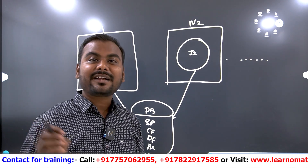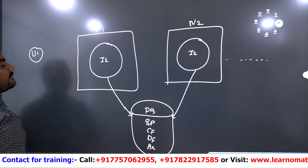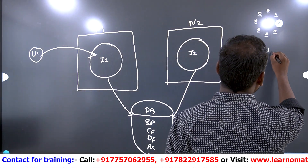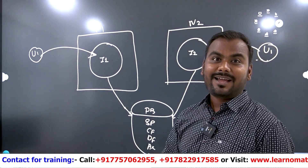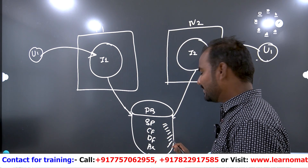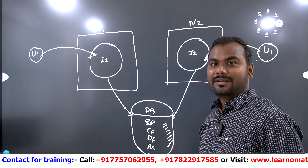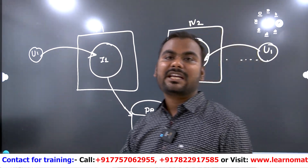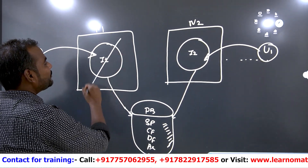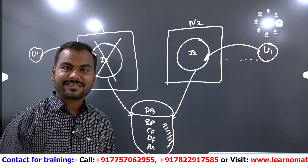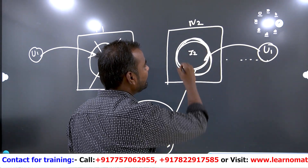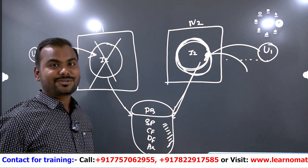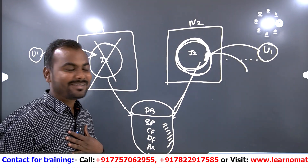This database is shared by instance number one and instance number two. The end user is getting connected to the database, and when user one says they want to connect, they don't care whether they are connecting through instance one or instance two — at the end, they want to get data from this database. The end user doesn't know which instance they got connected to; what's important is that they're getting the expected data. This is high availability: if instance one goes down for any uncertain reason, the user can still connect through instance two, which is still running, and access the database. The user won't even know that instance one went down.